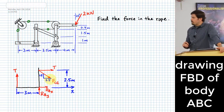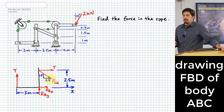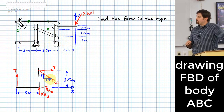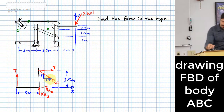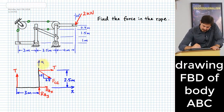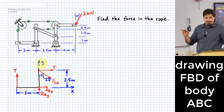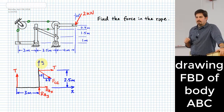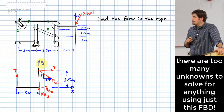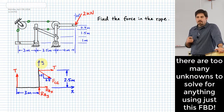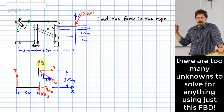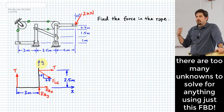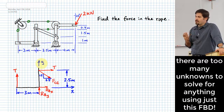It looks pretty decent at this stage, though I forgot to put my y-axis on there. Now the problem: I've got too many variables — four unknowns on that free body diagram. Body ABC is a non-concurrent force system, which means I have up to three equations that I can apply to it, which means I've got too many unknowns for my number of equations.